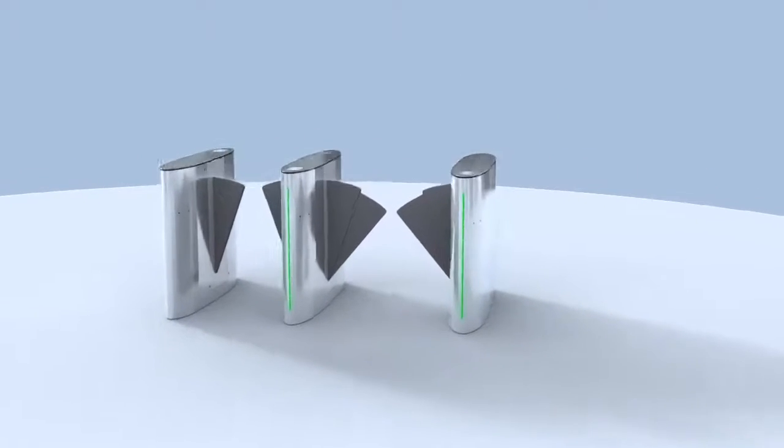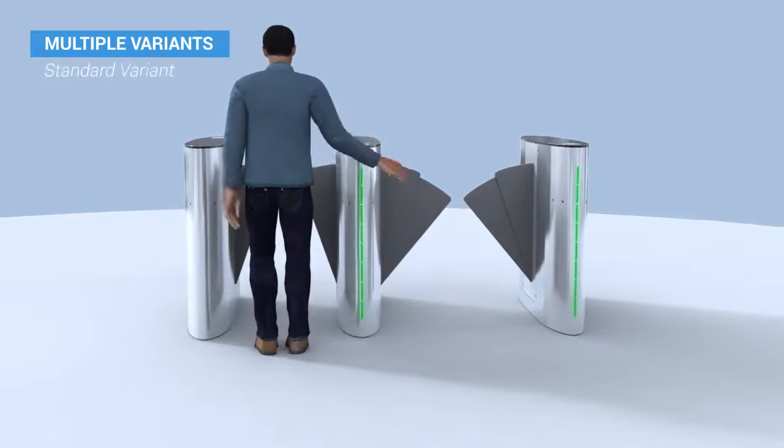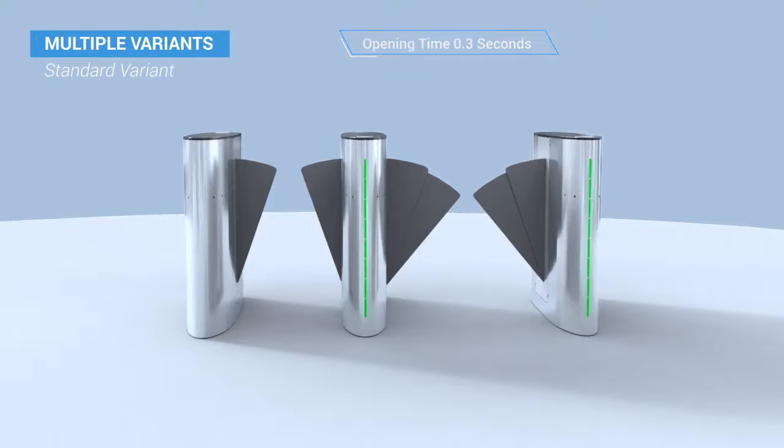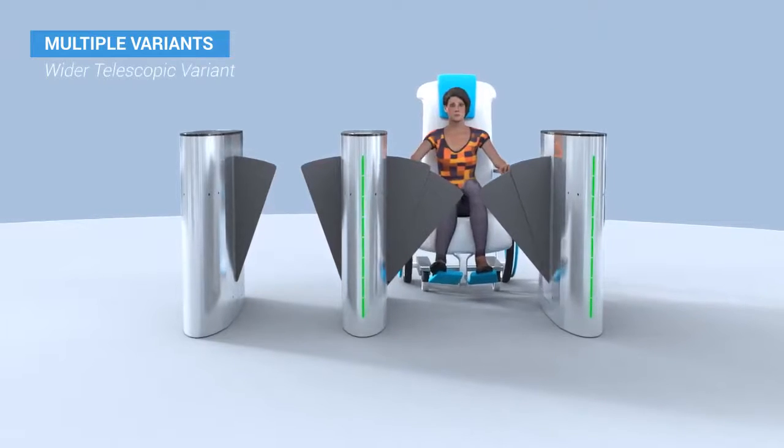The NPR Series from Magnetic comes in two variants. The standard flap variant with shorter opening time of 0.3 seconds ensures quick pass-through, and the wider telescopic flap variant